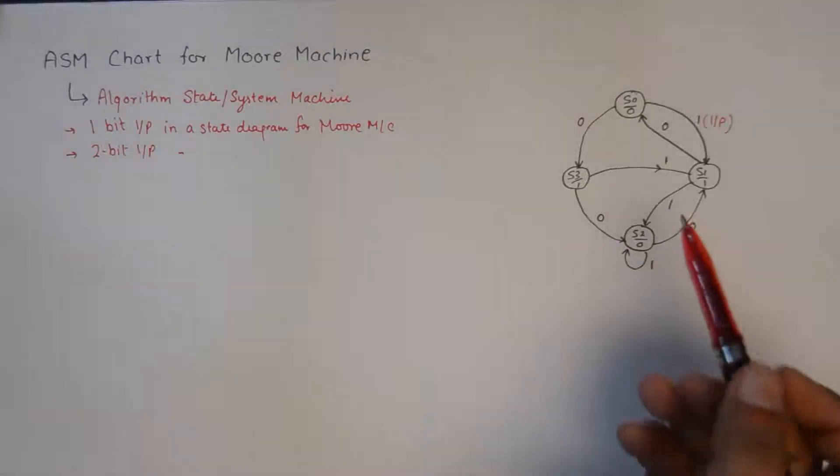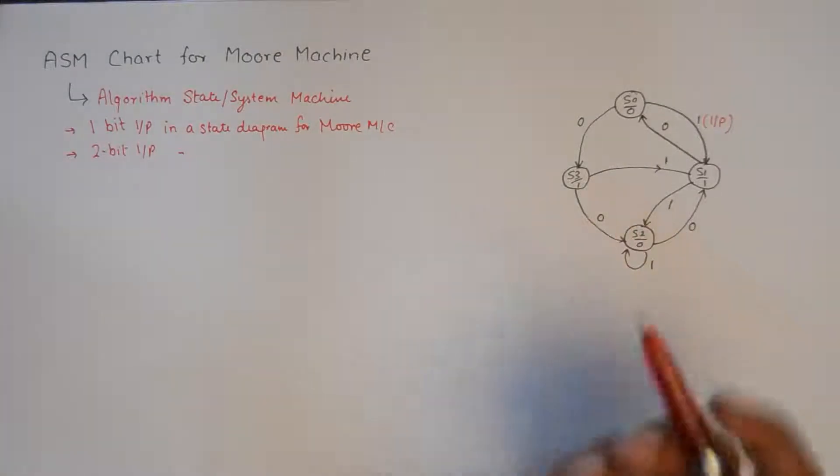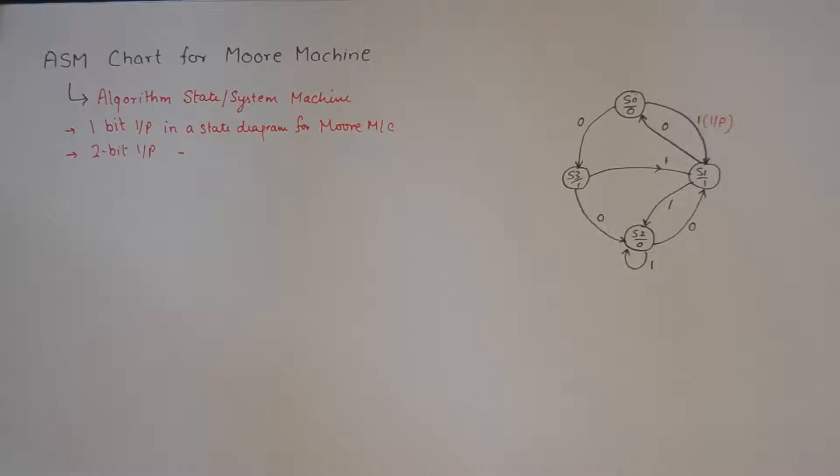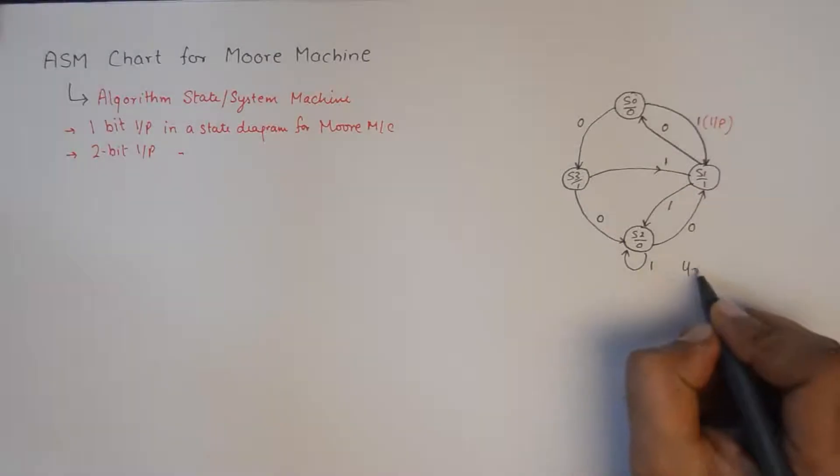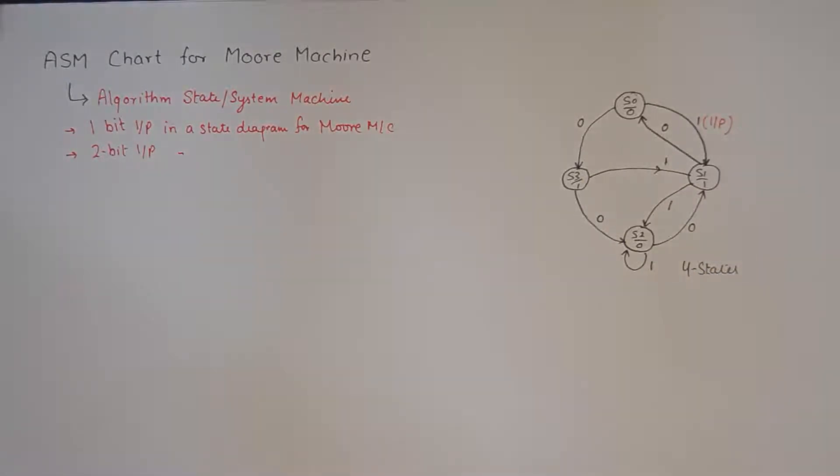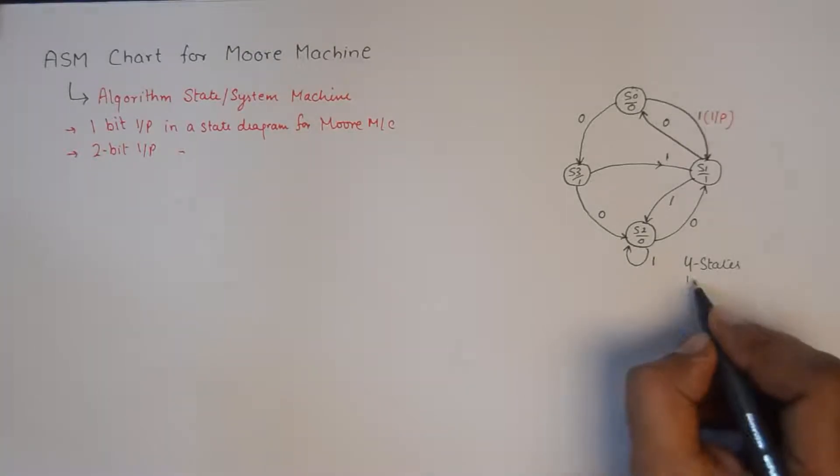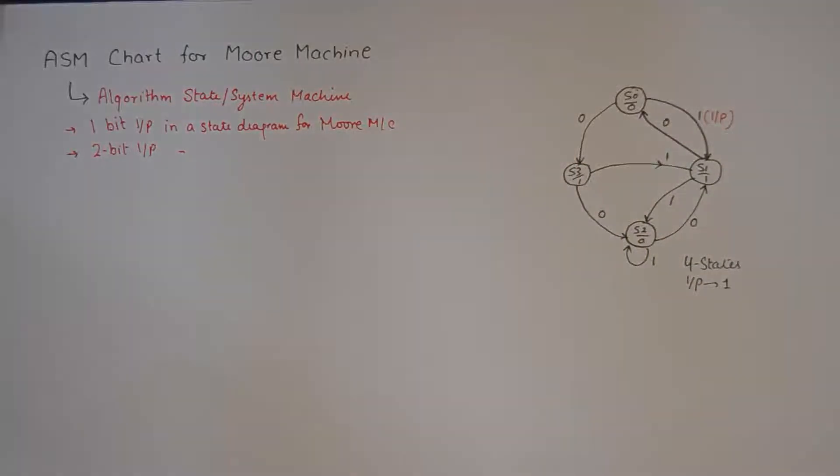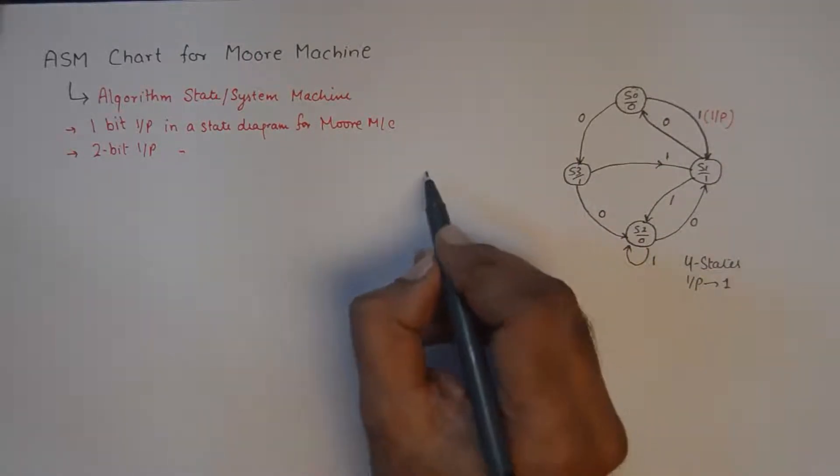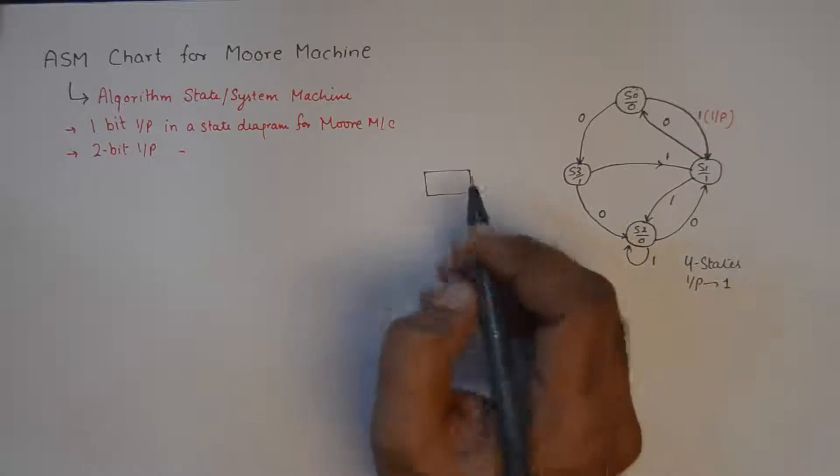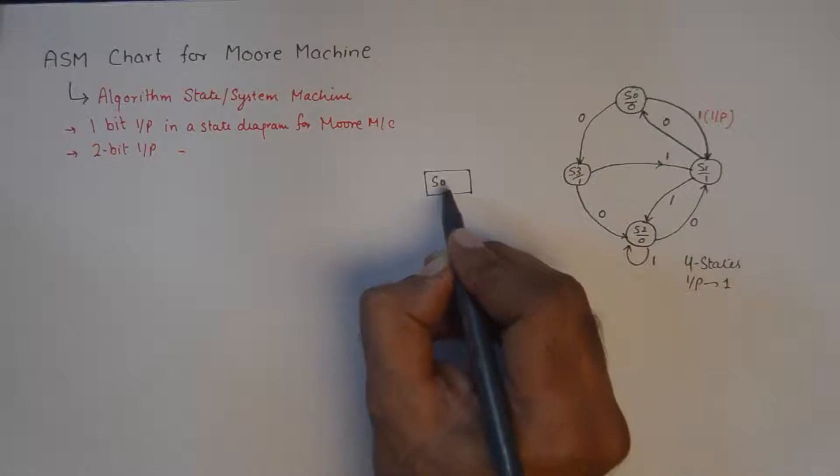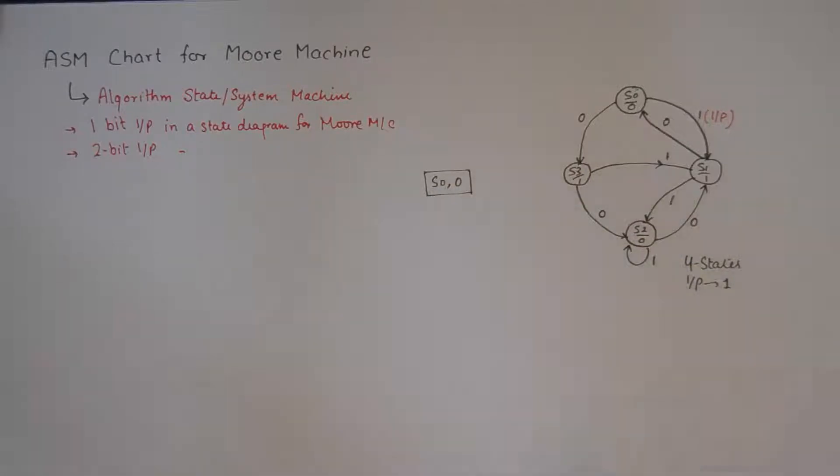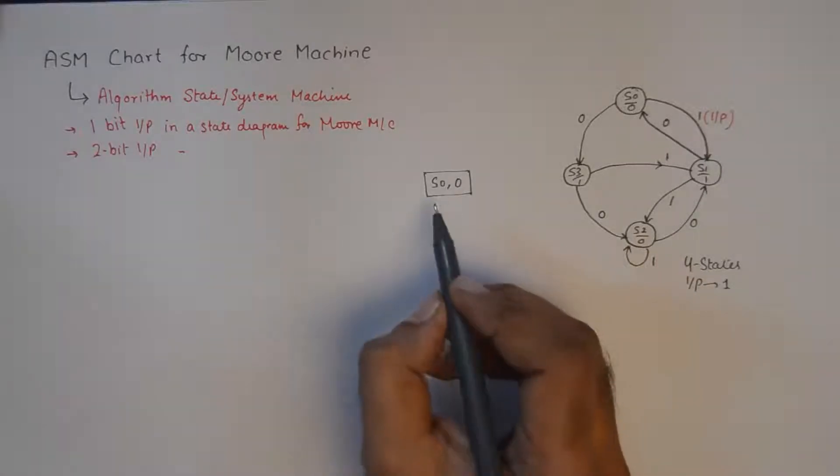We'll see that with an example. So right now we'll start with the drawing of the ASM chart or the conversion of state diagram into ASM chart with this example. Now here in this example we have four states and the number of inputs are one. We'll start up with the first state which is S0 where the output is zero, so that is how we represent it.